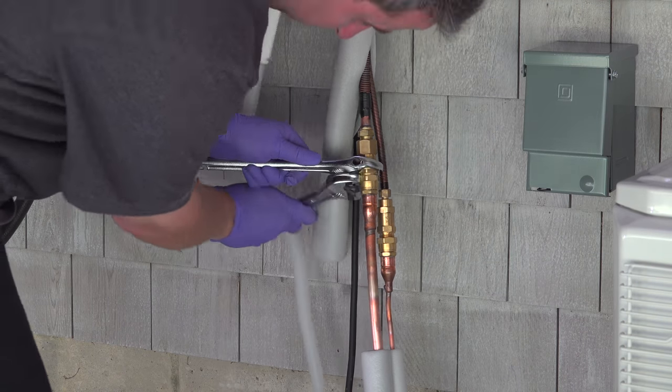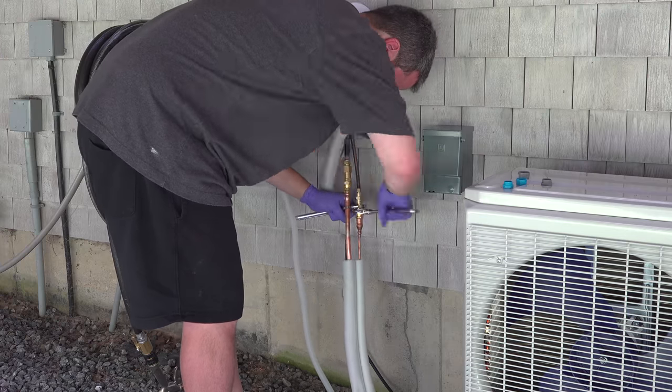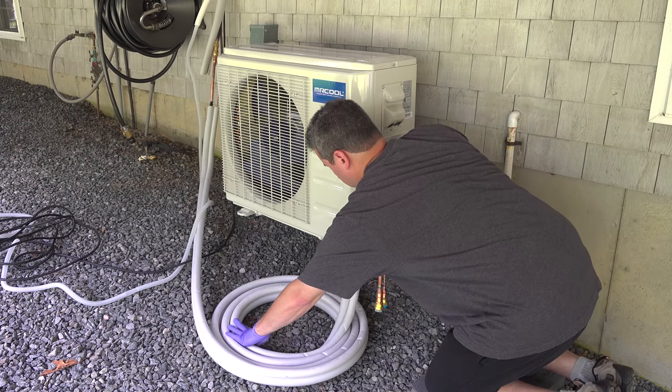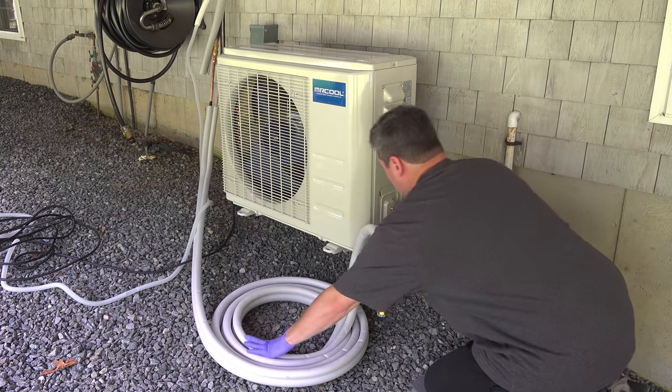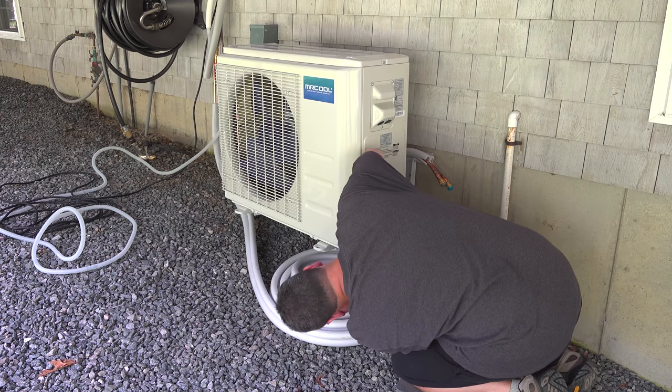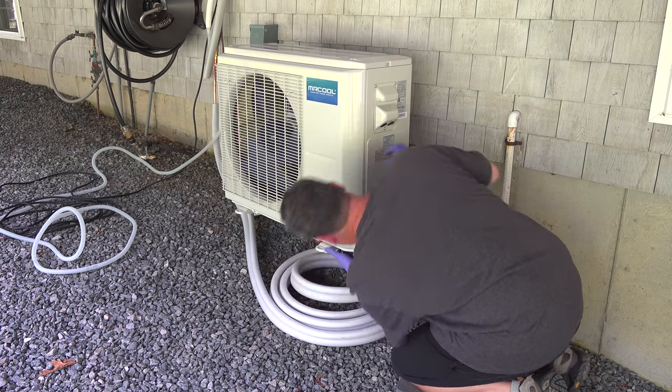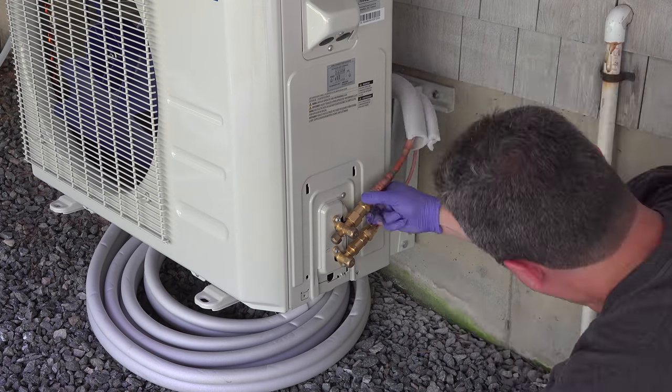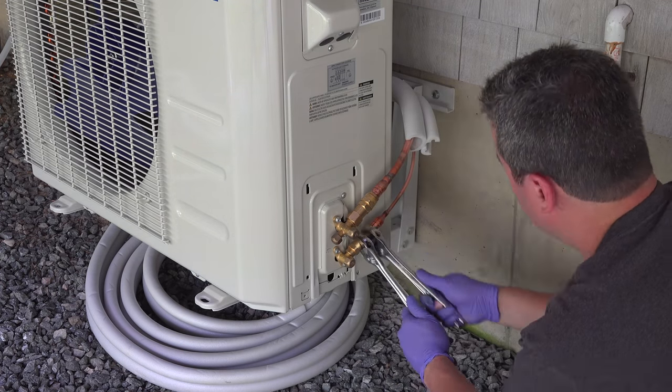Now we've just got to connect the other end of the refrigerant lines into the Mr. Cool condenser. But you've also got to think about the coil of hose because you've got to put that somewhere. And if you read the directions, you're not supposed to put that extra hose vertically. It can actually cause problems with oil getting trapped, so they recommend keeping it horizontal. Connecting these is super easy. They just thread on like the other end of the line. Then tighten them up with the wrenches and you're almost done.